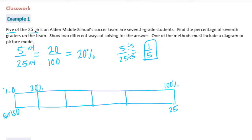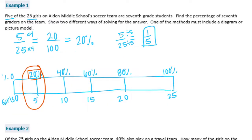So if I break the 100% into 5 equal pieces, each one would be 20%, 40%, 60%, and 80%. And then of course the 100%. If I break the 25 girls into 5 equal parts, we'd have 5, 10, 15, 20, and 25 girls. So this is showing that 5 of the 25 girls right here is equal to 20%.